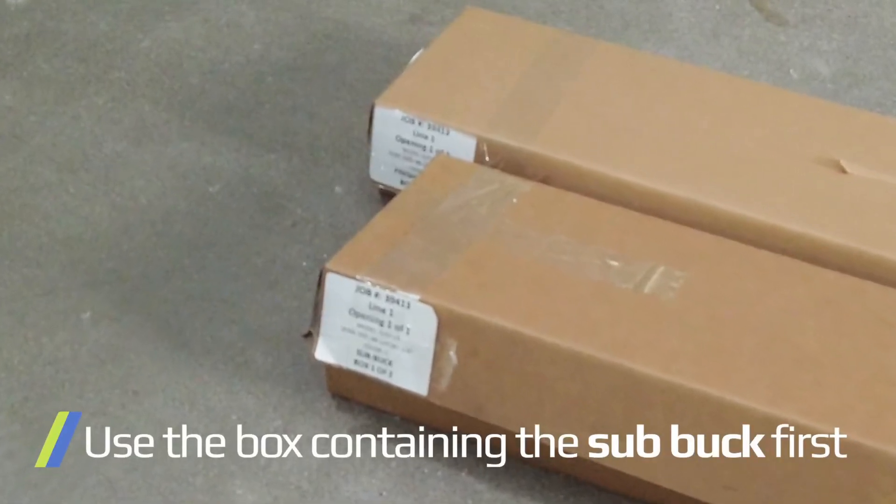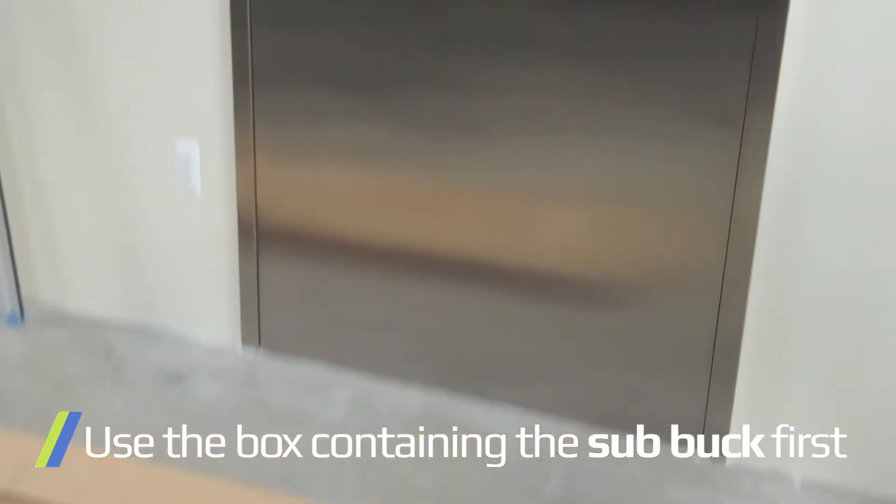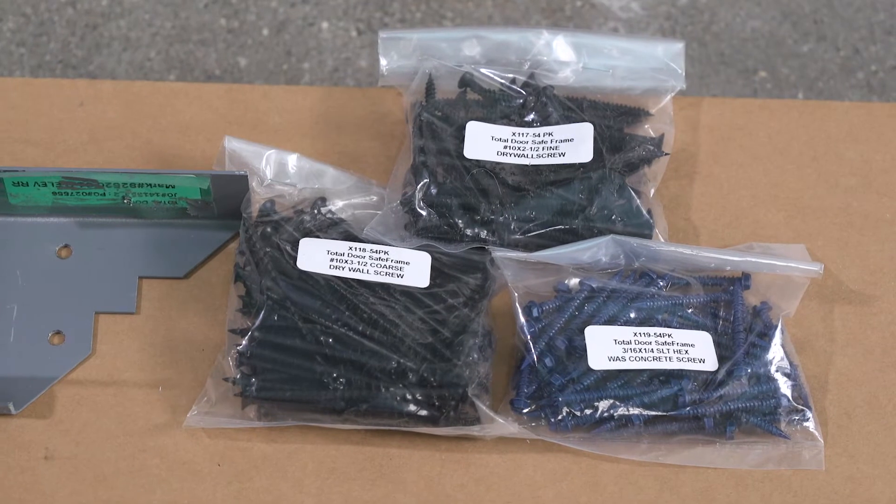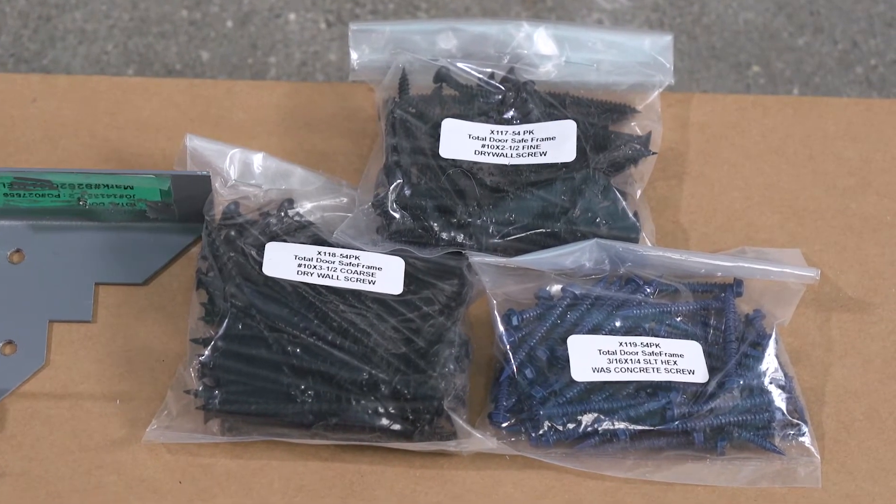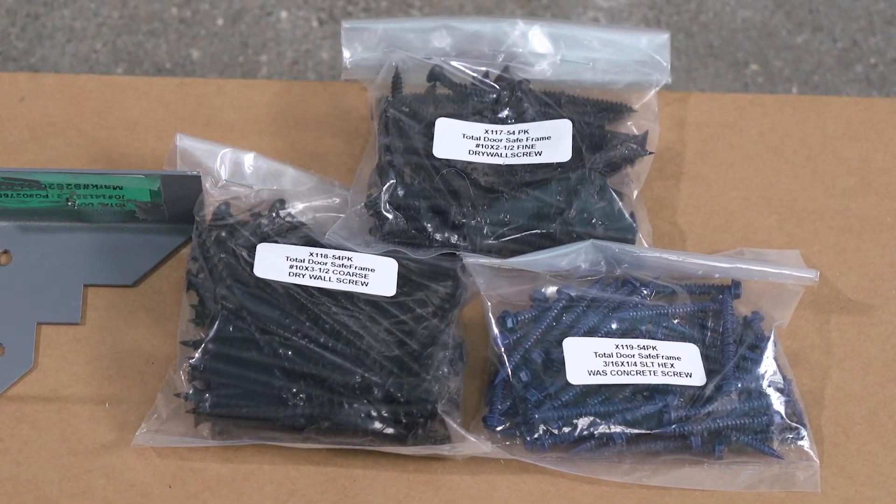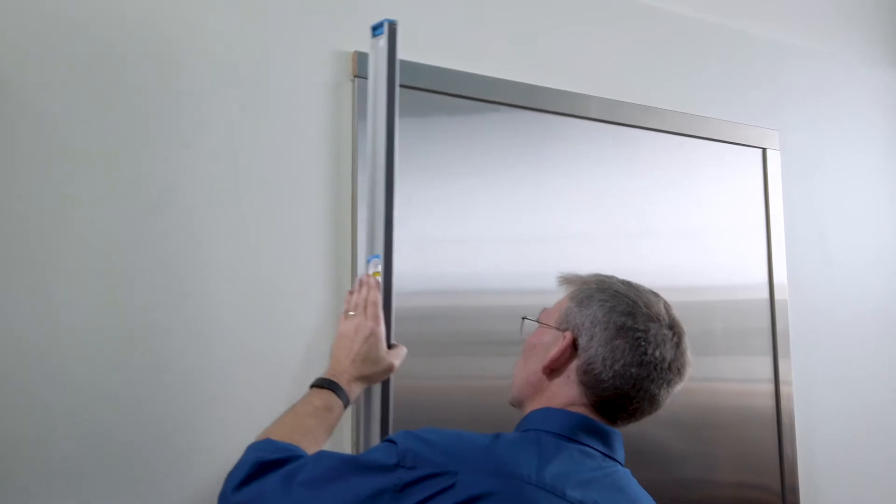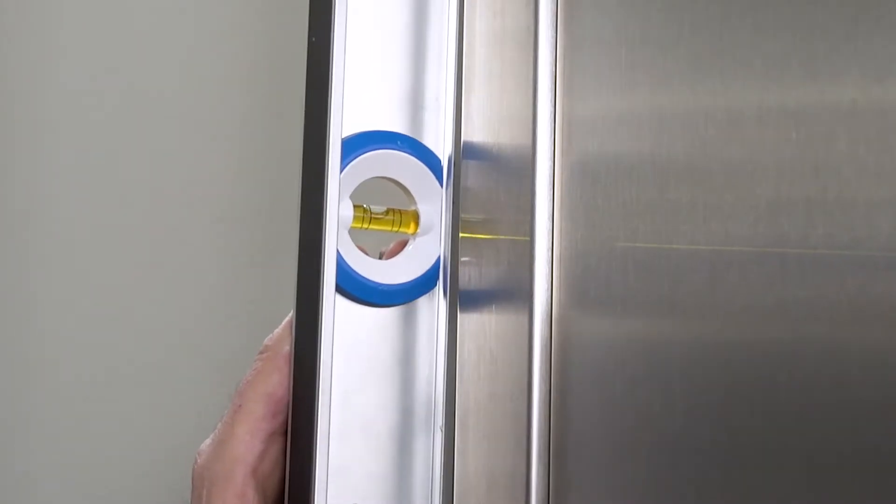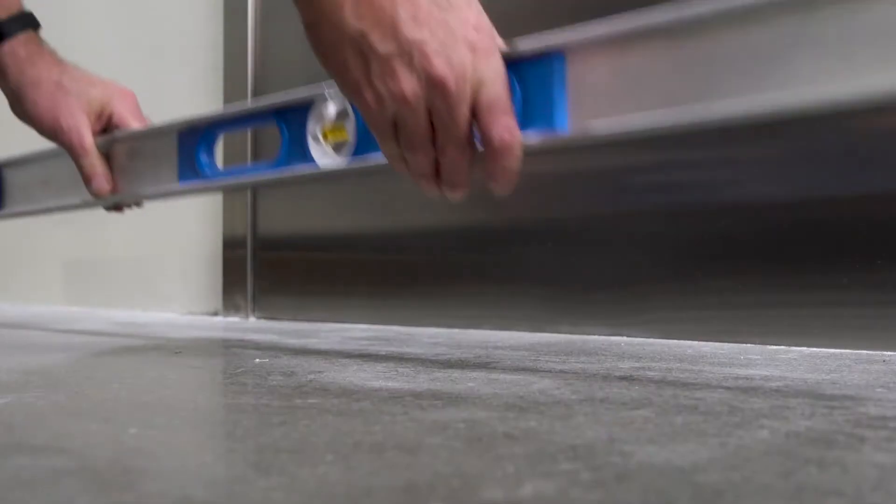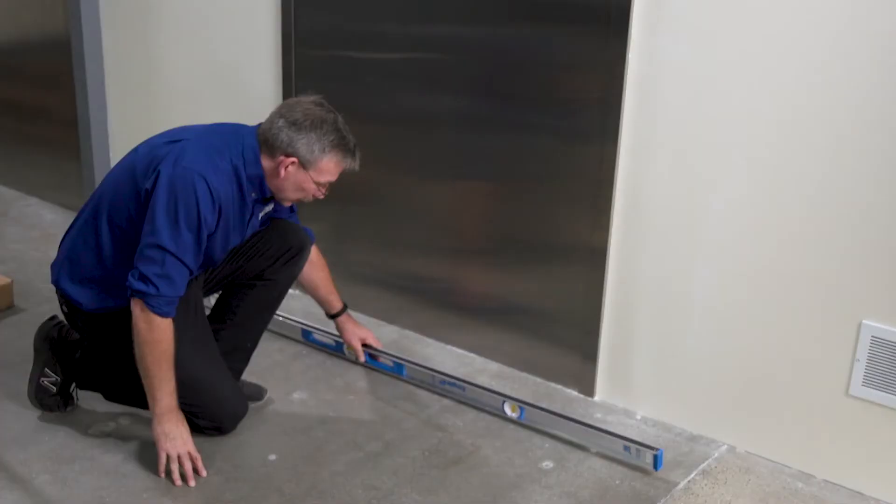The first box to use is for the sub buck, containing the pieces that will be placed directly against the wall. The sub buck box contains instructions and the screw set that is appropriate for different wall conditions: one set for concrete or masonry, one set for wood, and one for steel stud construction. Check the wall conditions by making sure they are plumb, then check the floor conditions to make sure the floor is level.